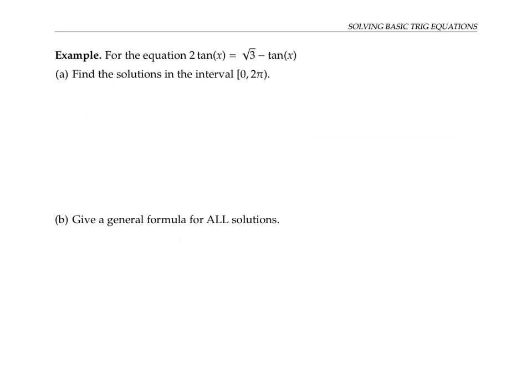Next, let's look at a tricky equation involving tangent. As usual, I'm going to start out by cleaning things up and isolating the tricky part, which in this case is tangent. So let me add tangent to both sides. That'll give me three tan x equals the square root of three, and so tan x equals the square root of three over three.